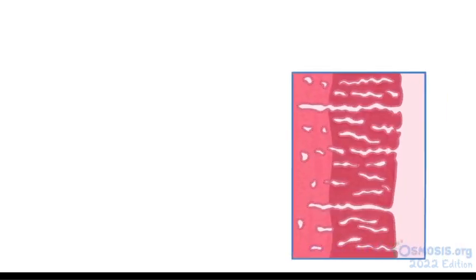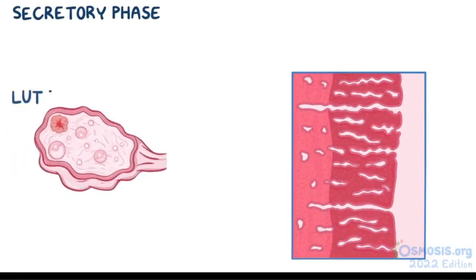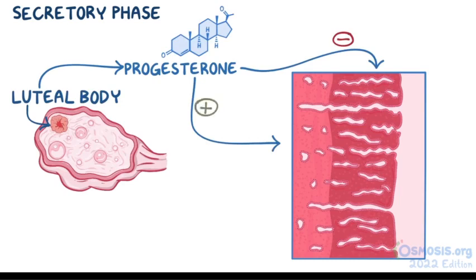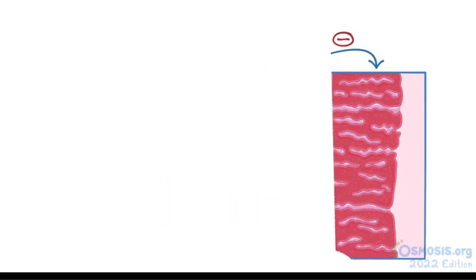During the second phase of the menstrual cycle, also called the secretory phase, the remaining structure of the follicle, now called the luteal body, begins to secrete progesterone. Progesterone counteracts the effect of estrogen on the endometrium by stopping its growth, while causing the glands to produce secretions that act as nutrients for any developing embryo.